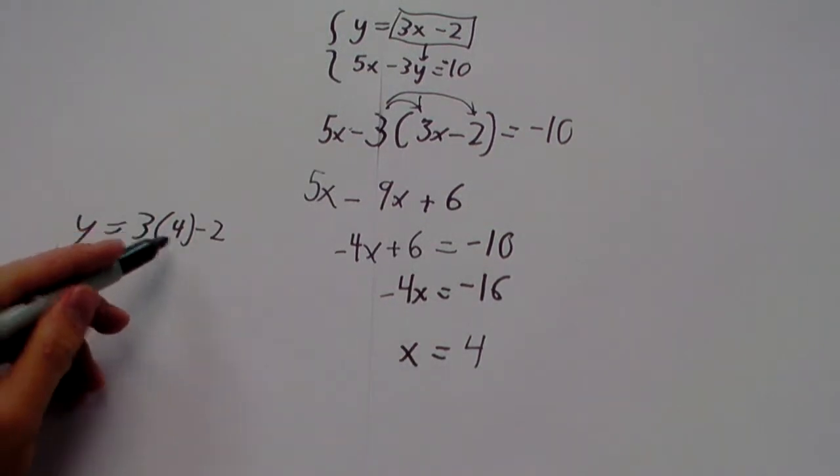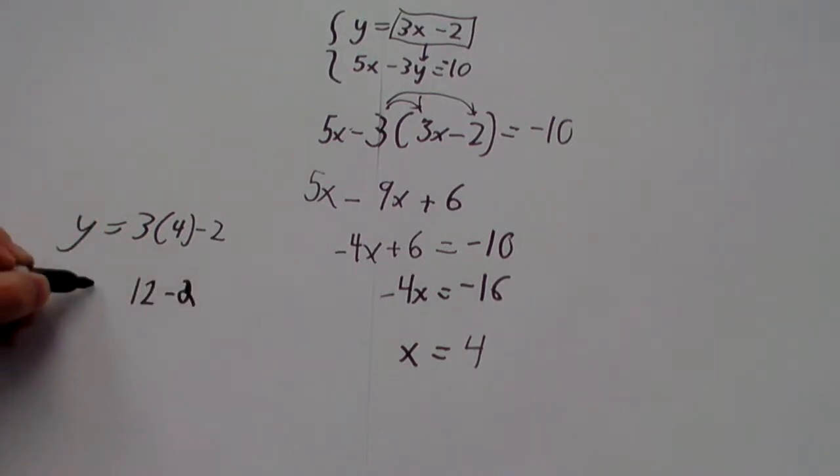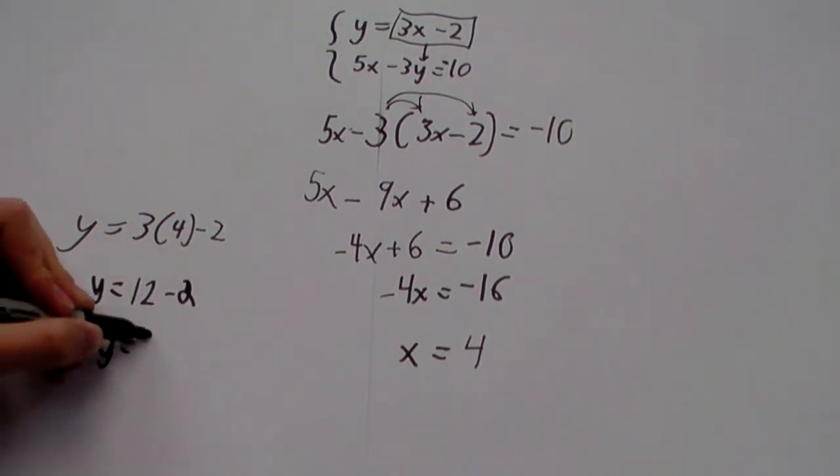If x is 4, then y is 3 times 4 minus 2. And that just gives us 12 minus 2, or 10 for y.